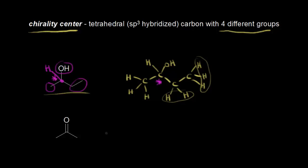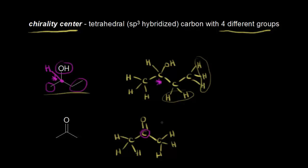For our next example, let's draw in the carbons. We have three carbons. The carbon on the left has three hydrogens bonded to it, so that carbon is not a chirality center. Same with the carbon on the right — three hydrogens. The central carbon is sp2 hybridized with trigonal planar geometry, so immediately you know it's not a chirality center. That would need to be sp3 hybridized with tetrahedral geometry and four different groups. So there are zero chirality centers in this molecule — that's acetone.